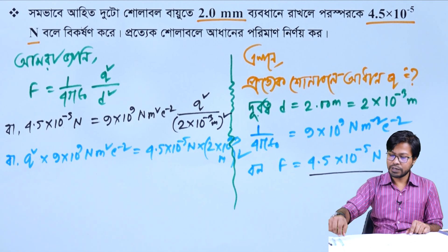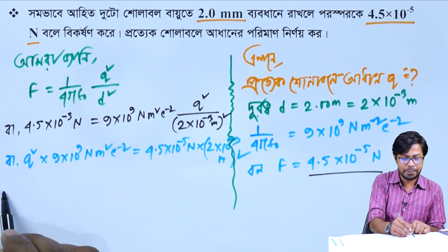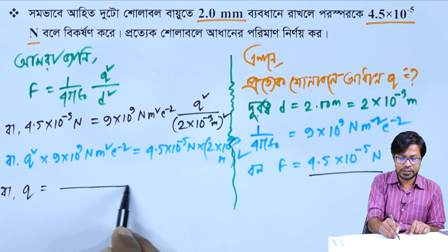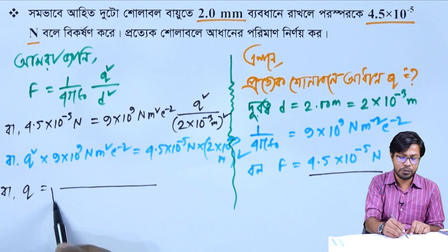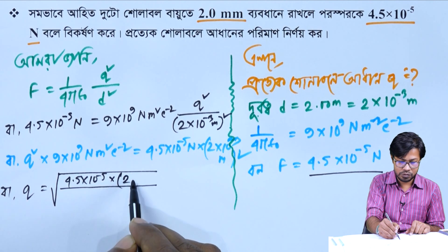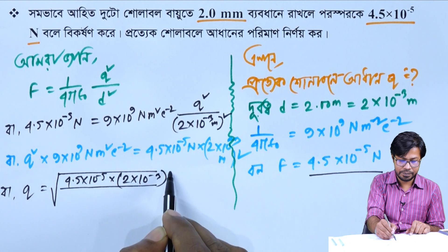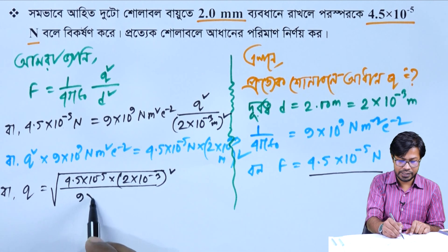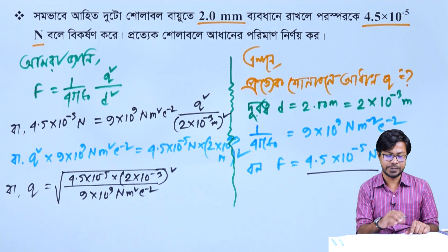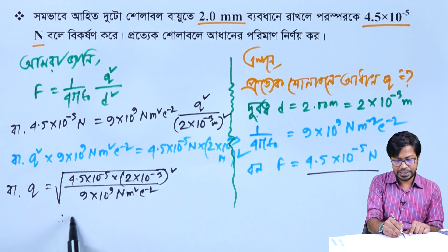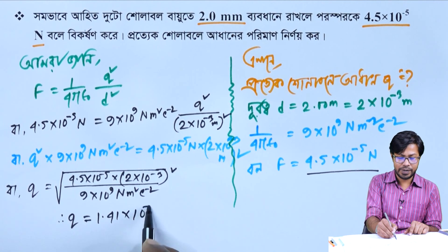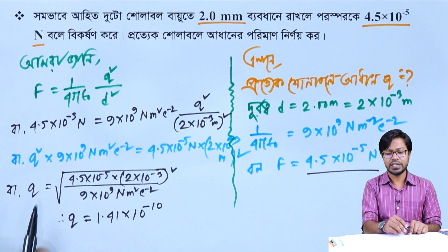We need to multiply 4.5 into 10 to the power minus 5 Newton with 2 into 10 to the power minus 3 meter square. Then we can solve for q. Taking the square root, q equals the square root of 4.5 into 10 to the power minus 5 into 2 into 10 to the power minus 3 squared divided by 9 into 10 to the power 9 Newton meter square per coulomb square. The result is 1.41 into 10 to the power minus 10 coulombs.